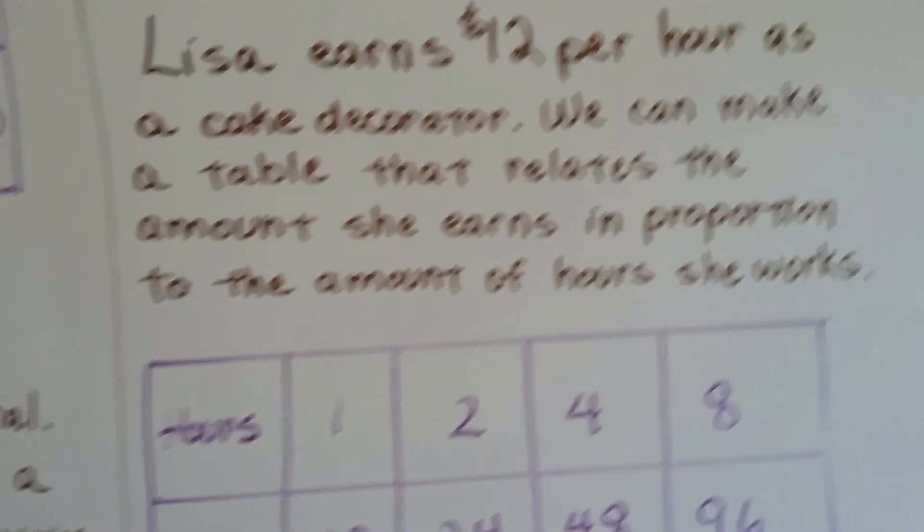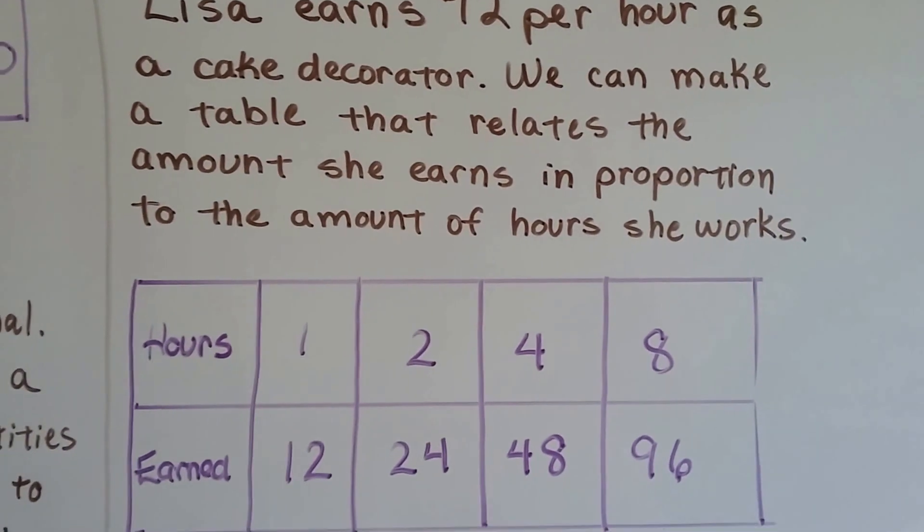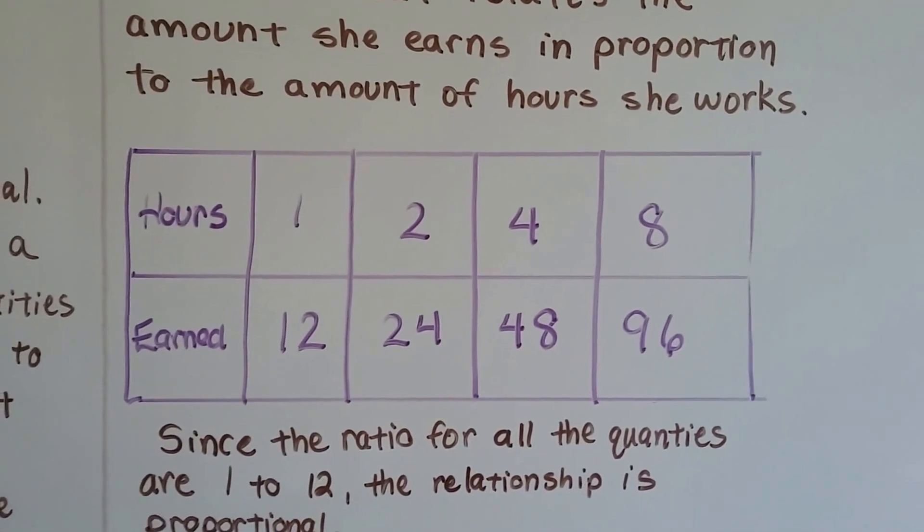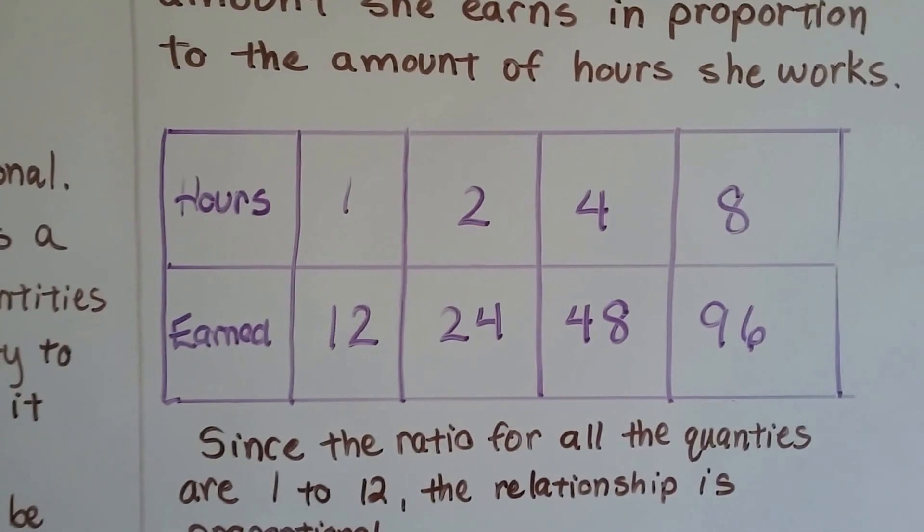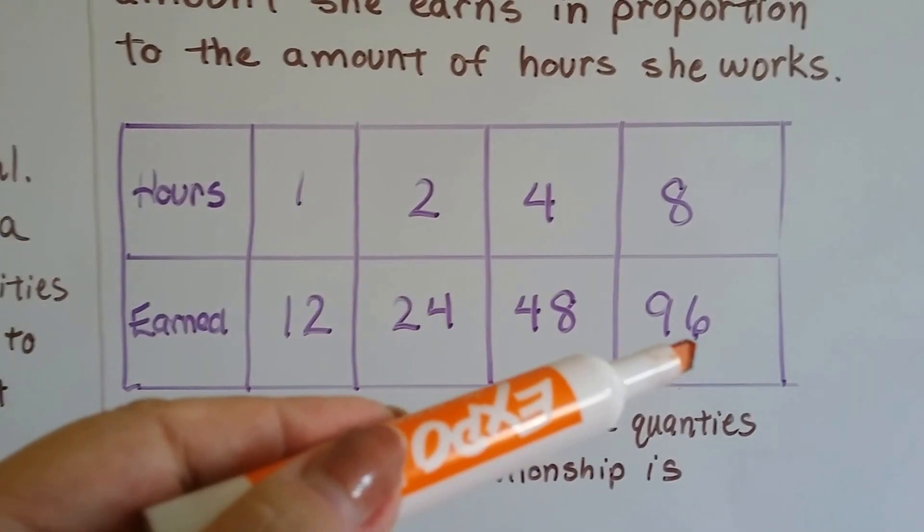All right. Lisa earns $12 per hour as a cake decorator. And we can make a table that relates the amounts she earns in proportion to the amount of hours she works. If she works one hour, she's going to make $12. If she works two hours, she's going to make $24. Four hours is going to be 48, and eight hours will be 96.